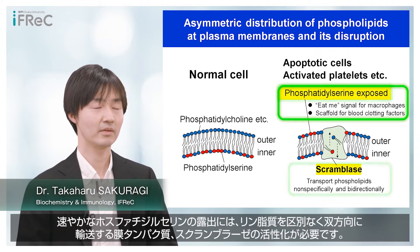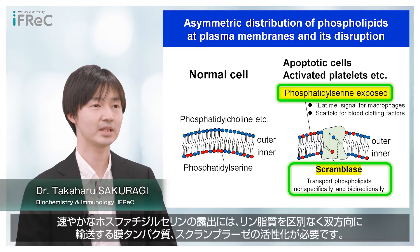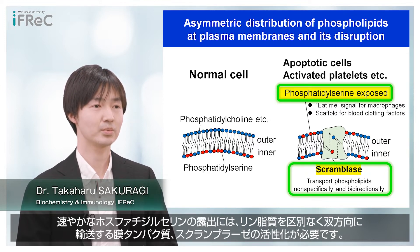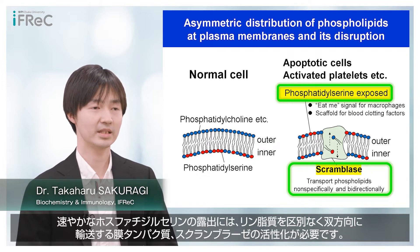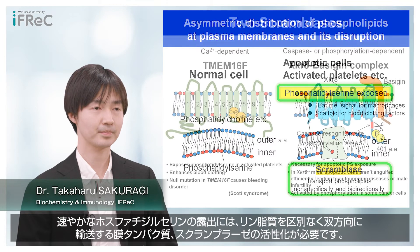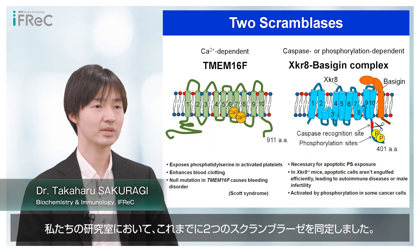For efficient phosphatidylserine exposure, membrane proteins called scramblases that transport phospholipids nonspecifically and bidirectionally should be activated. Two scramblases have been identified in our laboratory.